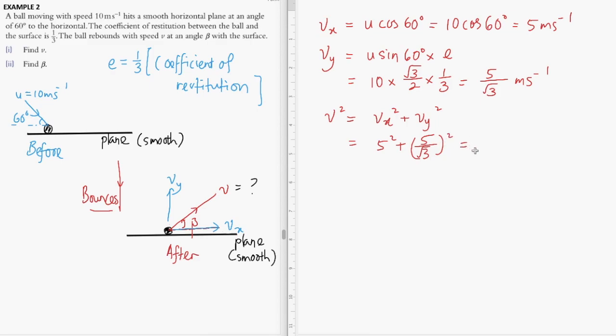Let's complete this calculation. We have v² = vx² + vy² = 5² + (5√3/3)² = 25 + 25×3/9 = 25 + 75/9 = 25 + 25/3 = 100/3. Therefore, the speed after collision is v = √(100/3) = 10/√3 meters per second.